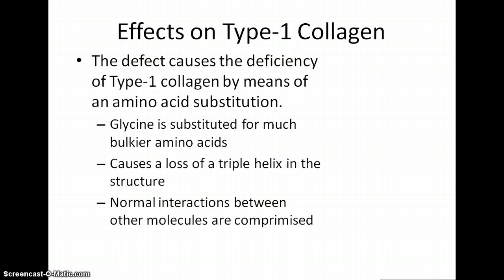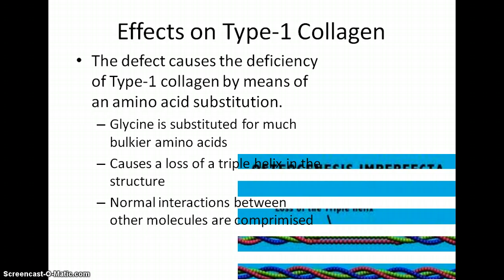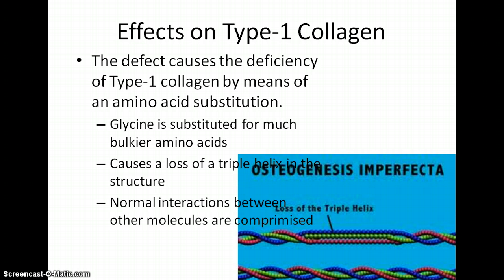The effects of this disease on type 1 collagen: it basically takes glycine, which is used as an amino acid in the protein, and substitutes a very bulky amino acid for glycine. The collagen is formed in a triple helix due to the protein structure. With the substitution of a bulkier amino acid in for glycine, it loses that triple helix structure, which in turn changes everything from nano, micro, and macromolecule interactions.